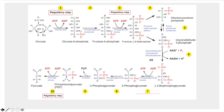Step 2 is isomerization: phosphohexose isomerase converts glucose-6-phosphate to fructose-6-phosphate, changing from an aldose to a ketose. Step 3, the second regulatory step, is another phosphorylation producing fructose-1,6-bisphosphate — the second investment of ATP. You cannot phosphorylate a carbonyl group, which is why the isomerization to fructose was needed: it converts carbon 1 to a hydroxyl group, allowing phosphate addition on carbon 1.